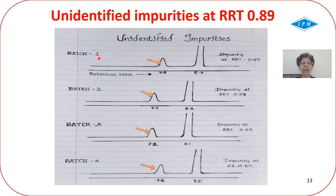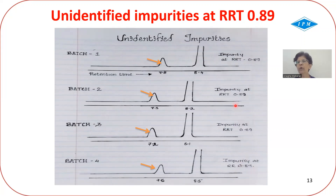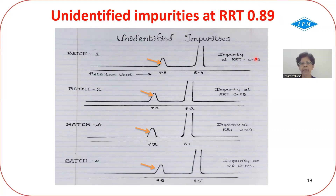Looking at batches 1, 2, 3, and 4, you can see a particular impurity eluting at different absolute retention times, but the relative retention time with respect to the main API peak is the same — 0.89 — across all four batches. This is reported as an unidentified impurity eluting at relative retention time 0.89, where the structure remains unknown.